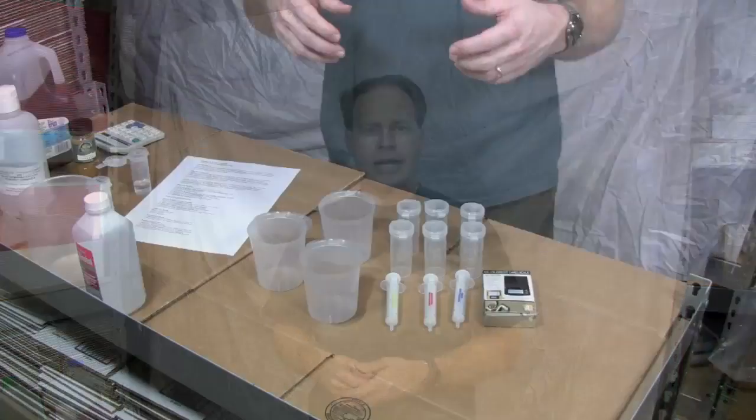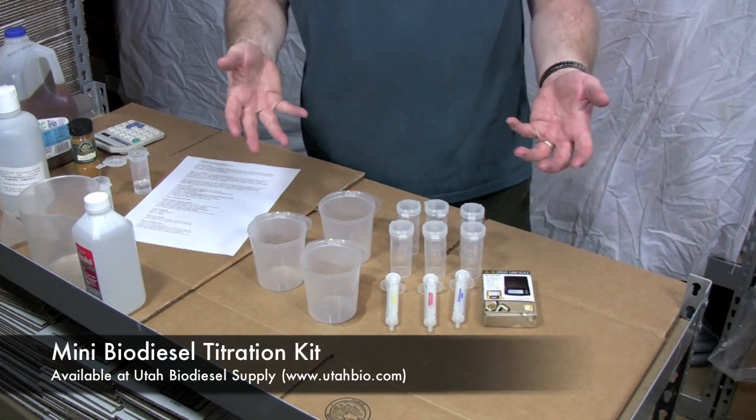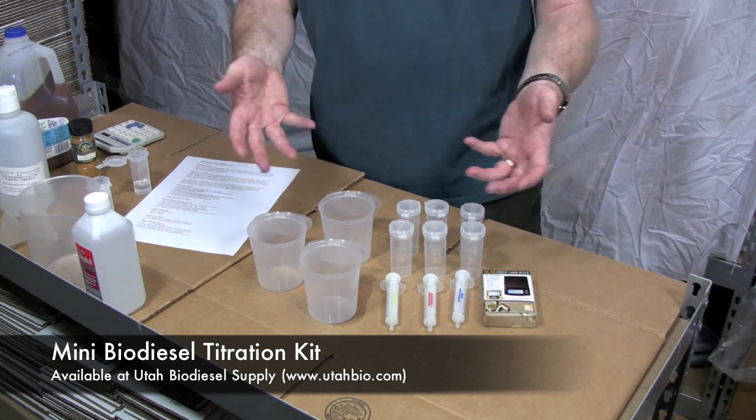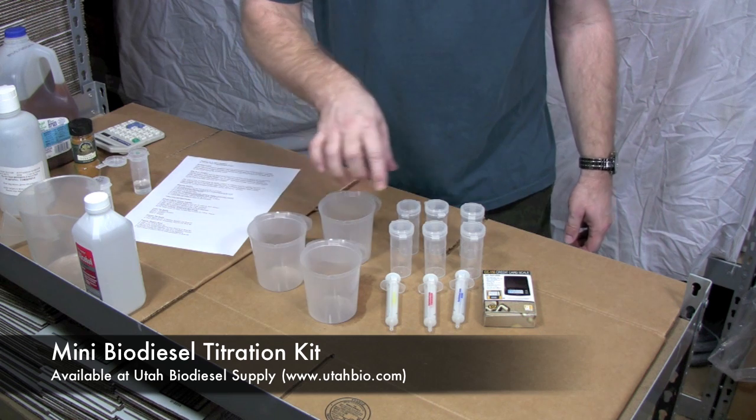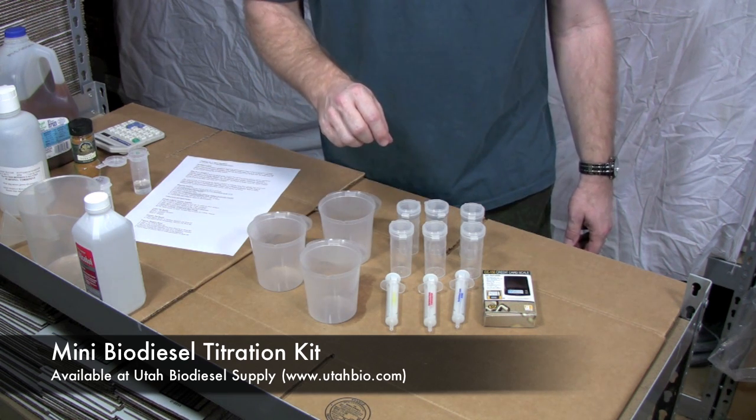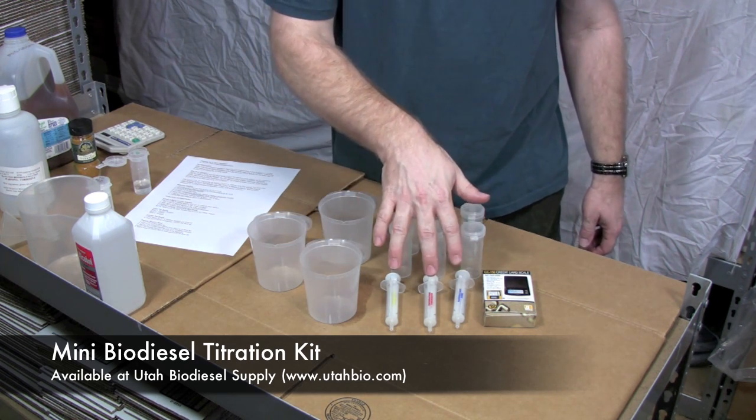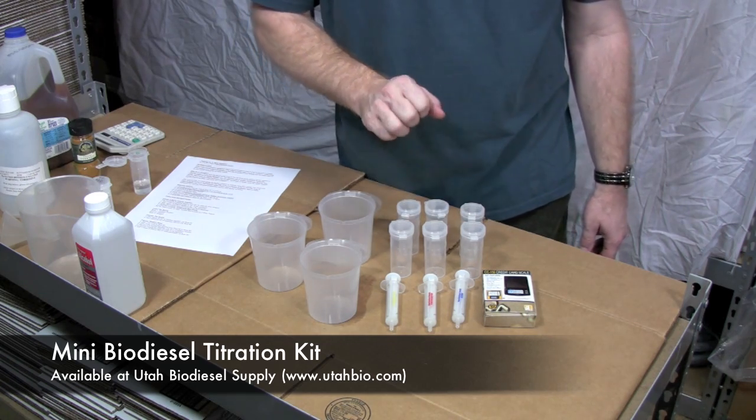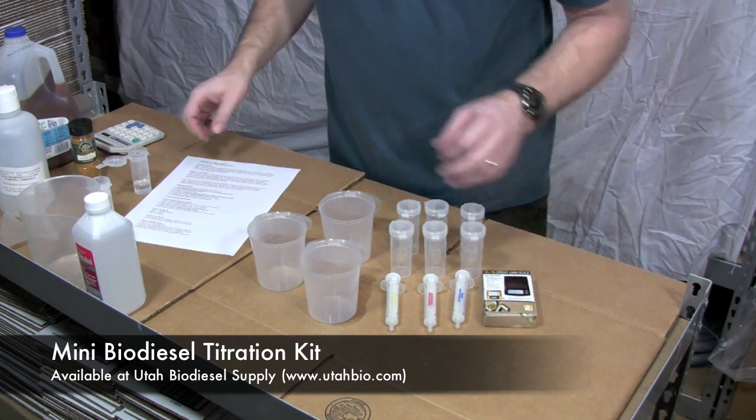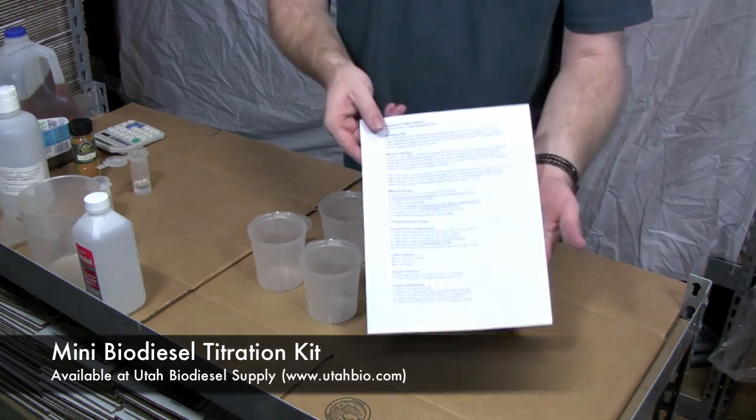I'm going to show you some of the things that we get in a kit from Utah Biodiesel Supply. Today we're going to show you our mini basic biodiesel titration kit which we'll be using today to do the titration. This comes with three jars to put your samples in, six vials to do the titration in, three syringes to test the oil, alcohol and titration solution with, a mini scale to weigh things out and a full set of instructions.